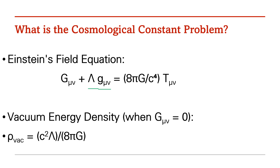When we set G_μν equal to zero, we get a direct relation between vacuum energy density from the energy-momentum tensor and lambda, the cosmological constant, through the relation: ρ_vacuum equals c² λ divided by 8πG. That is exactly the relation between the vacuum energy density and the cosmological constant.